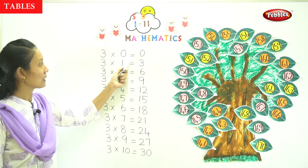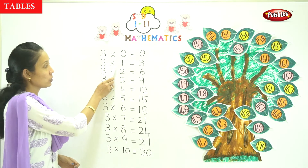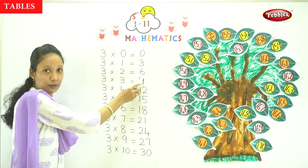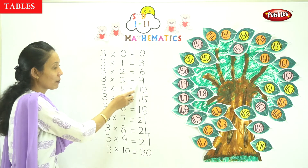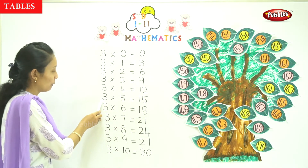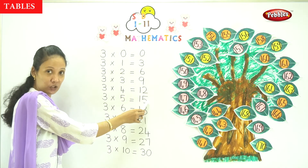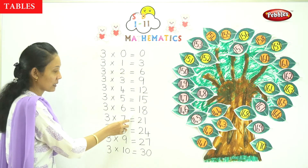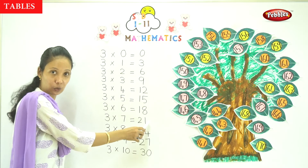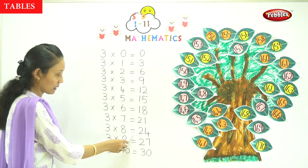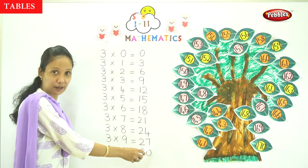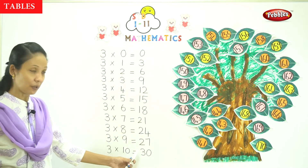3 into 0 is equal to 0. 3 into 1 is equal to 3. 3 into 2 is equal to 6. 3 into 3 is equal to 9. 3 x 4 is 12. 3 x 5 is 15. 3 x 6 is 18. 3 x 7 is 21. 3 x 8 is 24. 3 x 9 is 27.